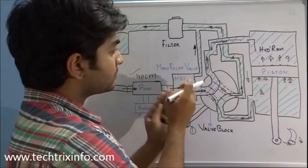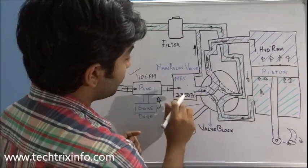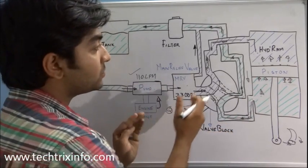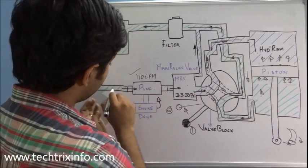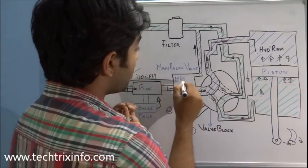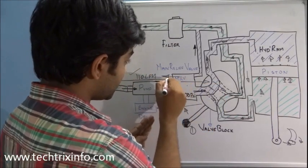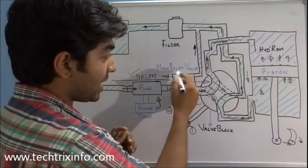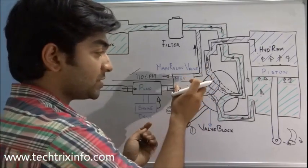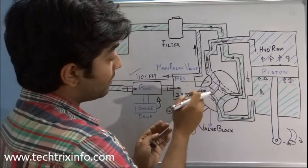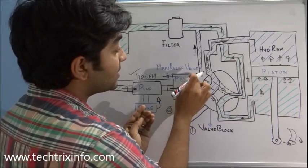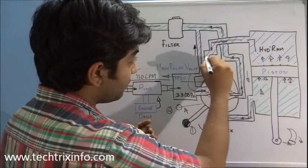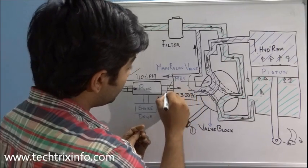Now let's see why a main relief valve is used. There is a pressure limit of 3300 PSI — that's the operating pressure of the hydraulic circuit of a JCB backhoe loader machine. In some cases we get back pressure towards the hydraulic pump. If a back pressure comes and hits the hydraulic pump it will result in pump failure. So to avoid that, we have a safety system — the main relief valve — whose function is to protect the hydraulic pump. If pressure above 3300 PSI arises, the flow is rerouted through the main relief valve.